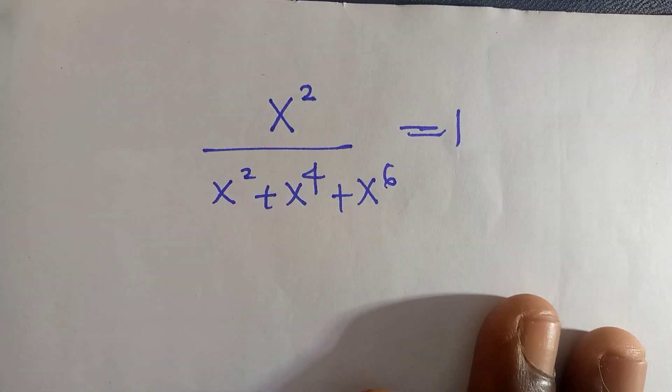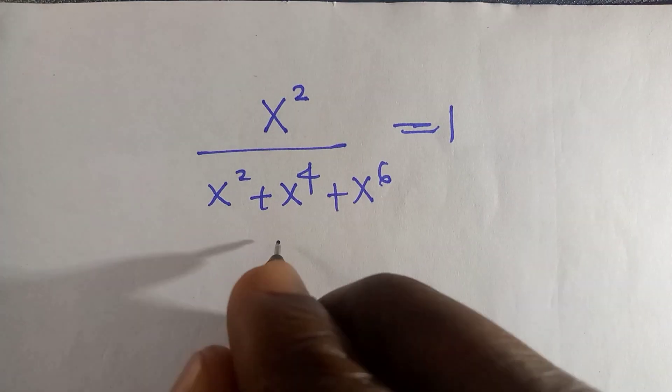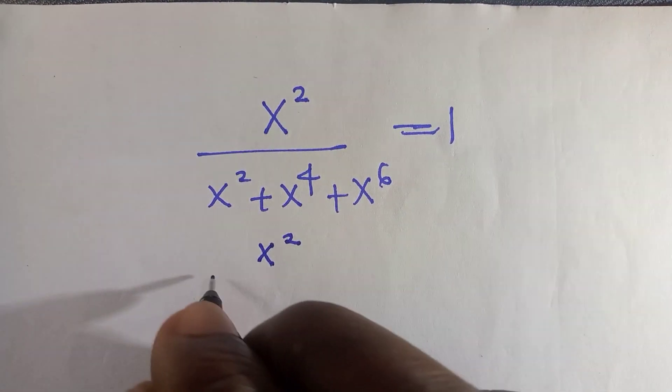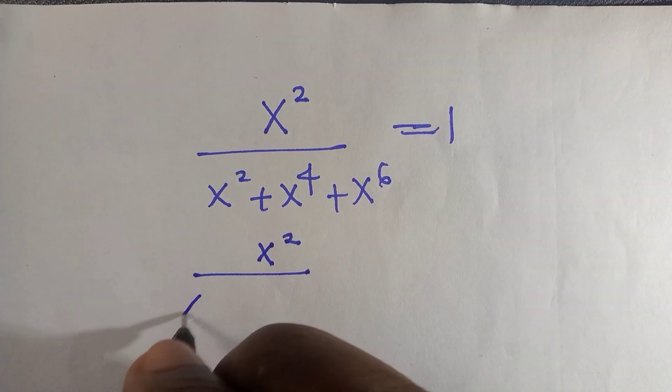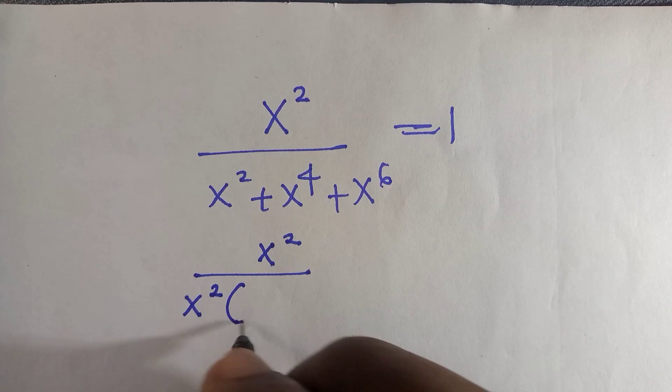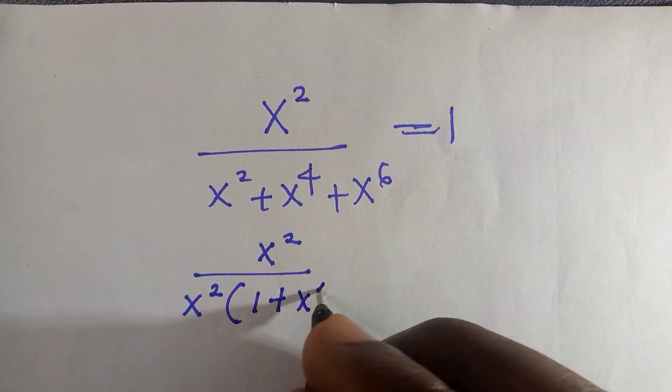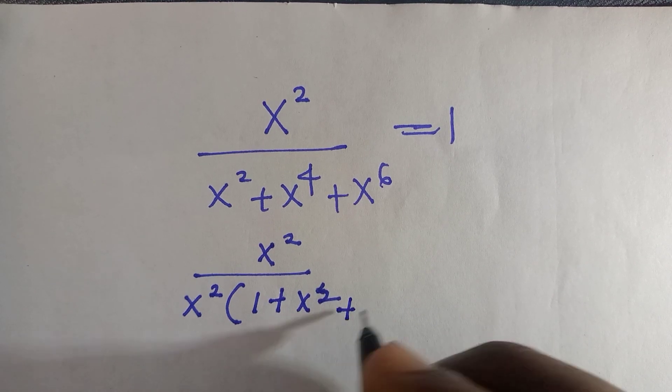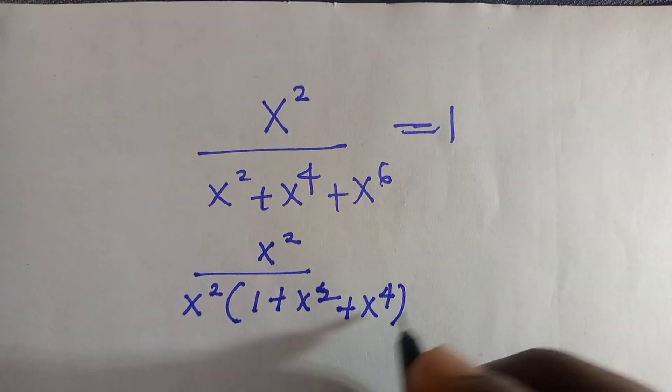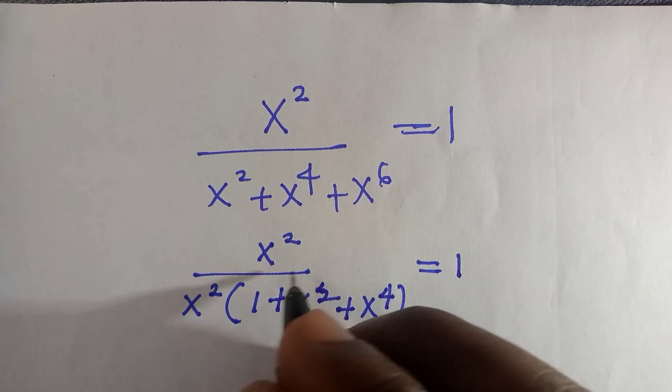So the first thing to do is having x squared divided by—but x squared is common here, so we take it out and it's remaining 1 here, plus x raised to power 2 plus x raised to power 4. Everything equals to 1.